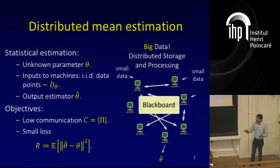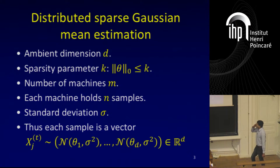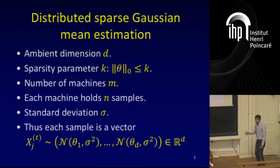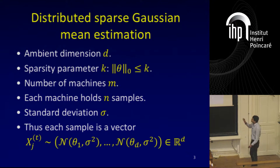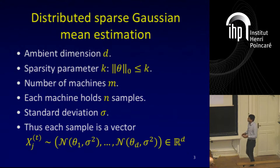The upper bounds are really simple in this model and the lower bounds hold in the strongest possible setting. The specific problem we will be looking at is Gaussian mean estimation, although our results are very general and can be used to study other mean estimation problems as well. There are a number of parameters in this problem. Later when I present the proofs I will shave off a lot of parameters, but for now let me state the problem in full generality.